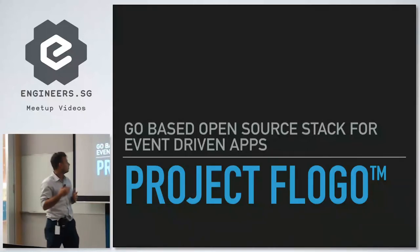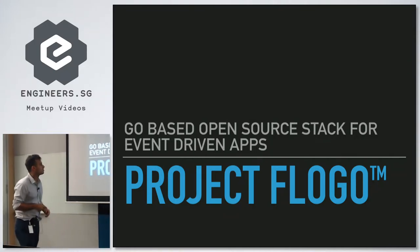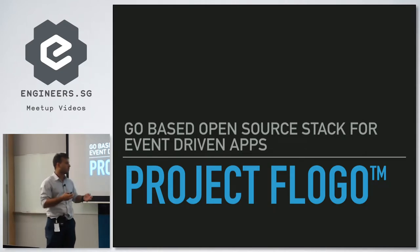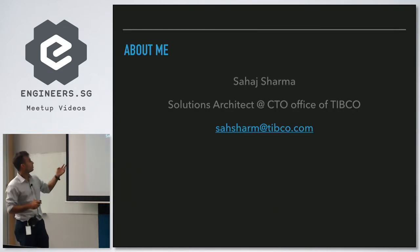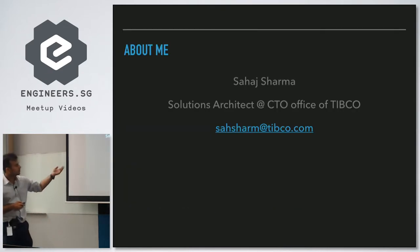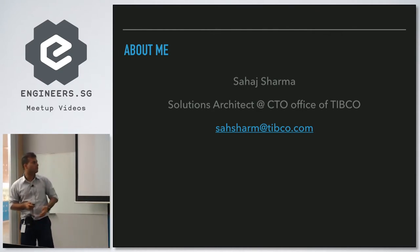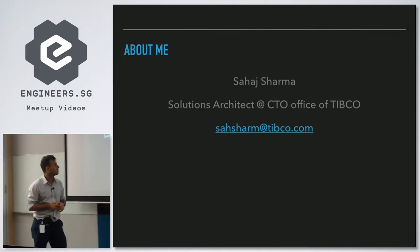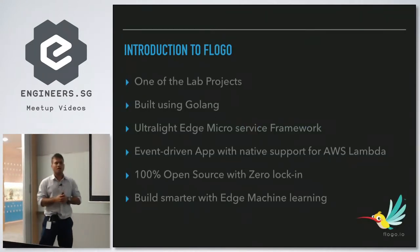Today I'm going to cover Project FlowGo. FlowGo is a Go-based open source stack for event-driven apps. I'll talk about why it's called an event-driven app. First, about me: my name is Sahaj Sharma, I'm a Solution Architect at the Center of Excellence at TIBCO. This is my email ID in case you want to send me any queries later.